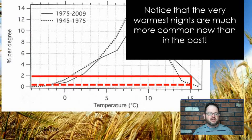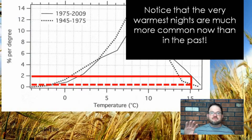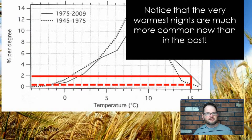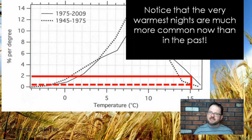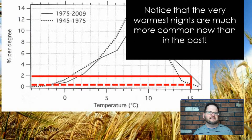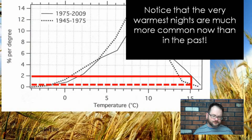The warming that has happened in Fairbanks not only has increased the average temperature, but it's made the extreme events — the very warm events — much more common, literally about four times as common as they were before. That's interesting. Climatology and the study of climate change can give us all kinds of insights about how climate is changing and what it means.